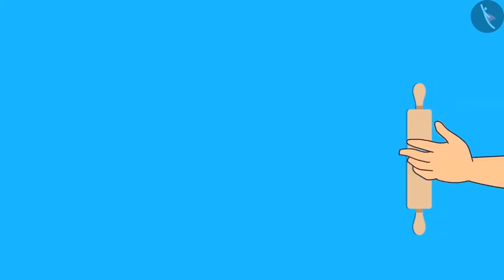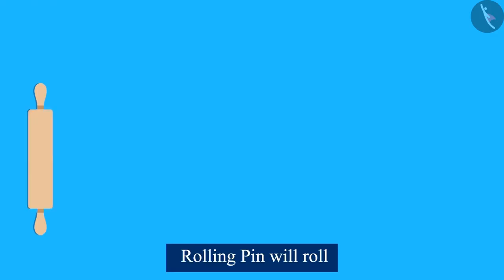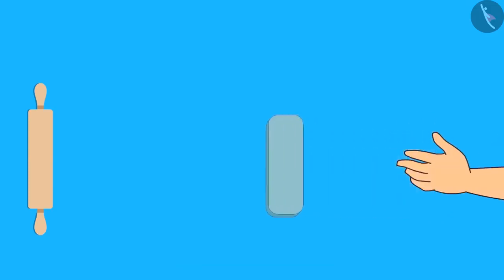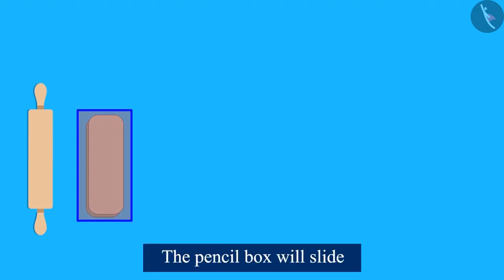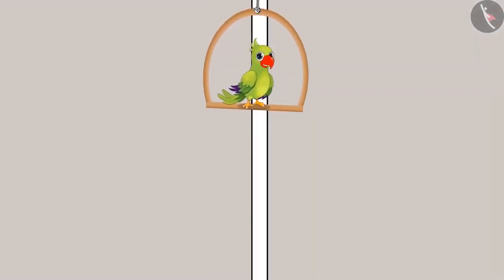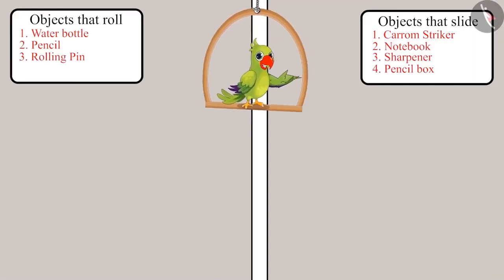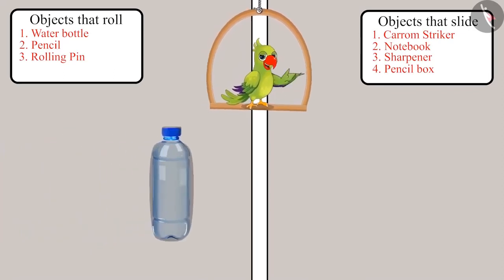Chotu agrees with Pinky. They then ask the children watching: will a rolling pin slide or roll? Since the surface of the rolling pin is circular, it will roll. And will a pencil box slide or roll? Since its surface is not circular, it will slide. Objects whose surface is circular always roll on the floor.